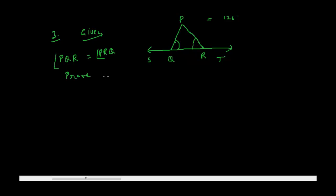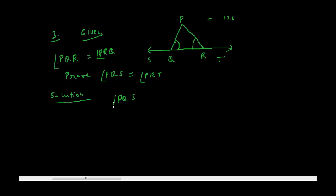We need to prove that angle PQS equals angle PRT. This is a pretty simple problem. From the figure, angle PQS plus angle PQR equals 180 degrees, since they form a straight angle on line ST.